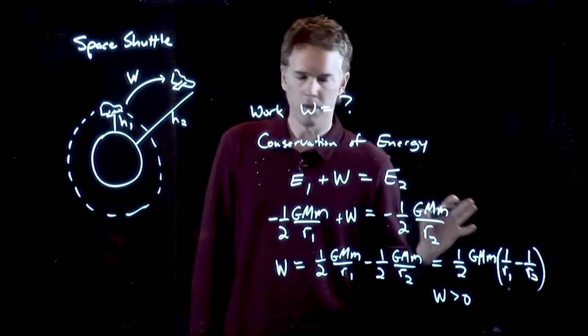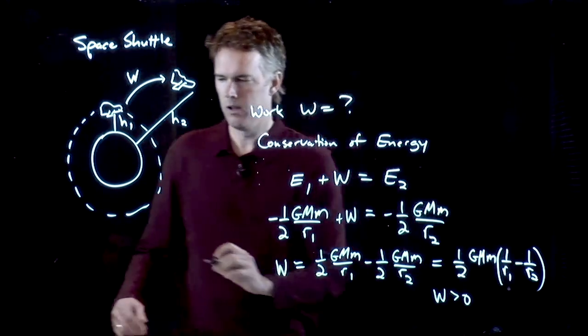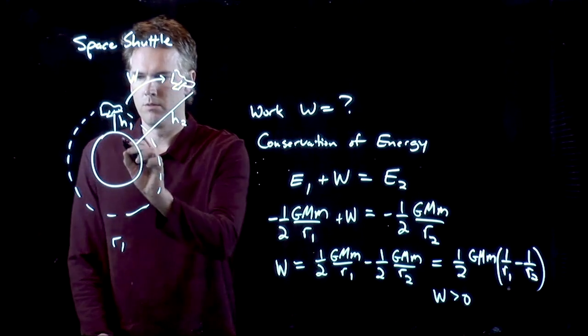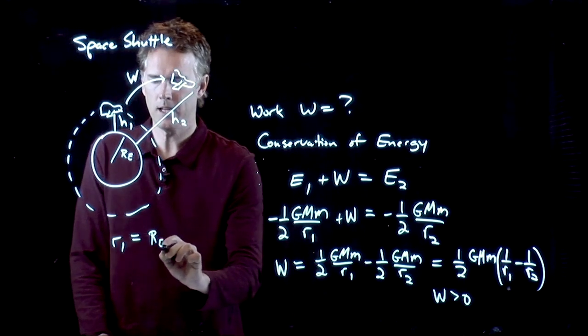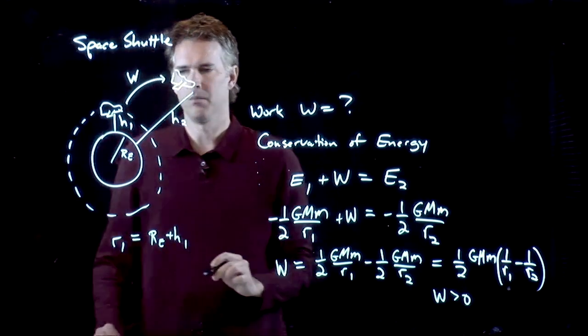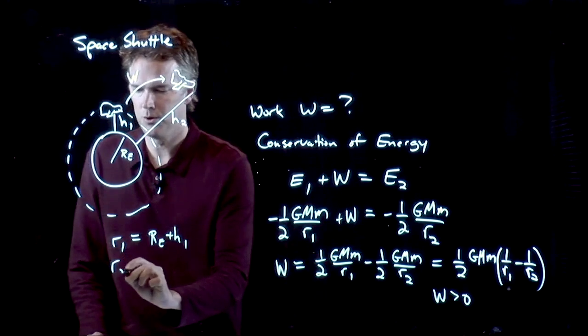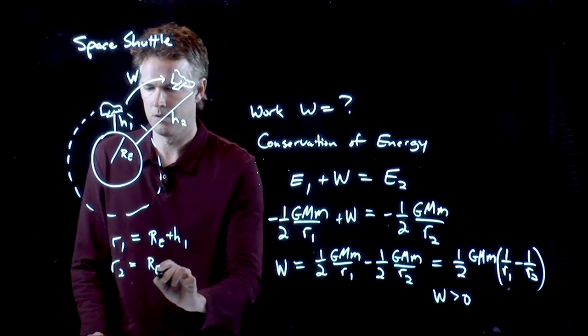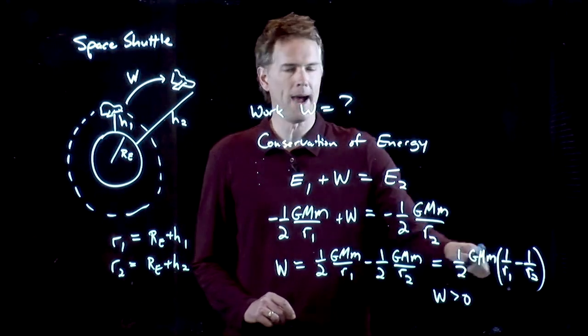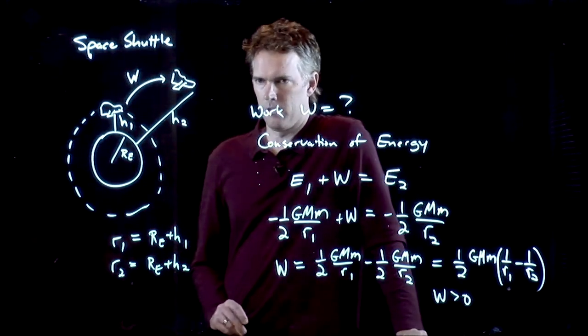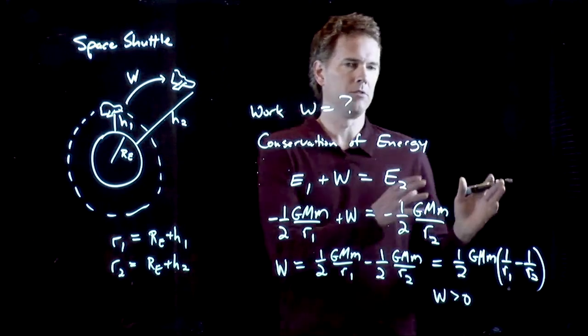You can plug in numbers here now if you know those values, and you have to remember that R1 is the radius of the Earth plus H1. R2 is the radius of the Earth plus H2. We would have to give you the mass of the Space Shuttle as well, but if you have all those numbers, you can plug them in.